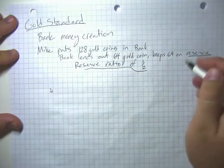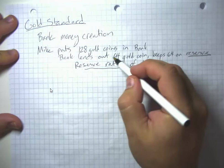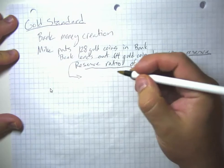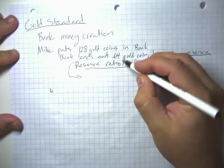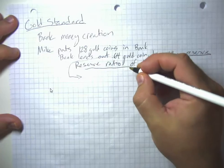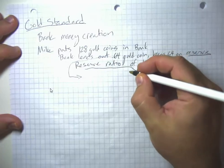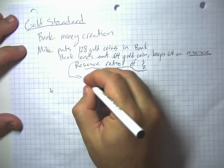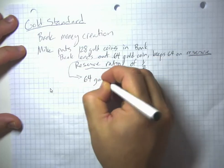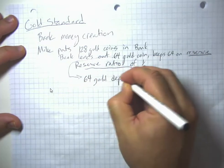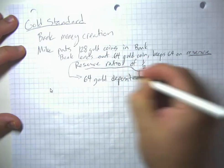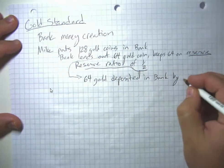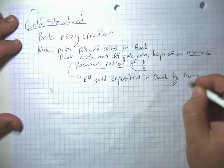When the bank lends out those 64 gold coins, these become available to be spent by someone else. Suppose it lends them out to somebody who's going to build a house, and that person builds a house. Then the person they pay to build the house deposits that money in their bank account. So 64 gold deposited in bank by Norm.